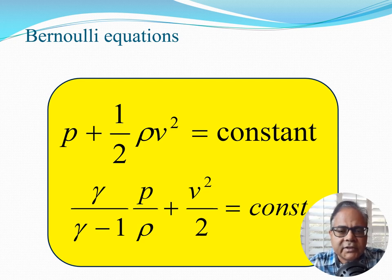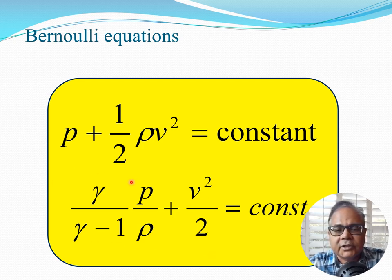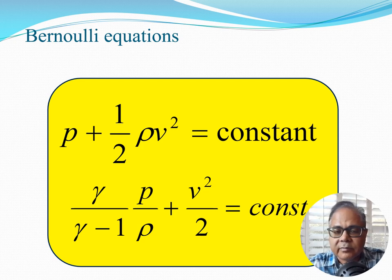Comparing the two Bernoulli equations: the incompressible form is p + ½ρv² = constant, while the compressible form is γ/(γ-1)·p/ρ + v²/2 = constant. They differ because gamma enters the compressible equation — this is where the thermodynamics of the system comes in, since γ = cp/cv comes from the first law of thermodynamics.